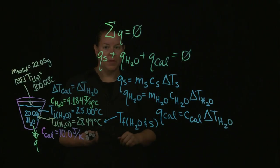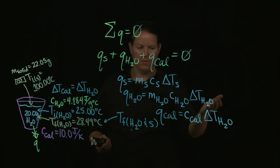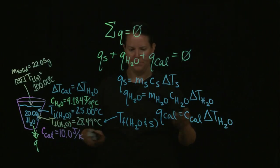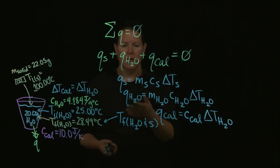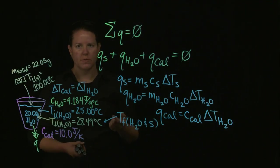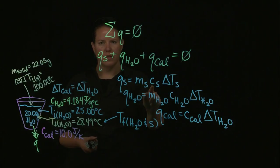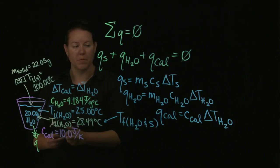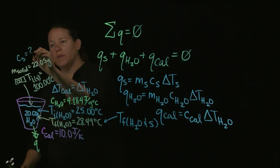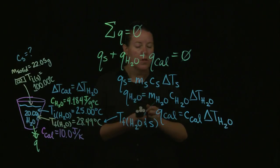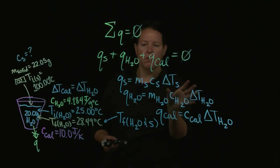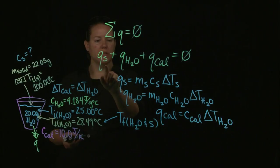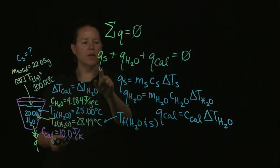Now I need to put this all together. I have all the values for the water, so I should put those in. I have all the values for the calorimeter. But what am I missing out of the Q of the solid? I'm missing the specific heat capacity of the solid — if you remember back to the problem, that's what the problem asked for.